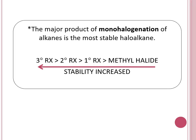To determine which haloalkane is produced when there are several types of carbon in the compound, we look at the stability of free radicals. Tertiary free radicals are more stable than secondary, which are more stable than primary, which are more stable than methyl free radicals. Therefore, if we can place the halogen at a tertiary carbon, that product will be the major product.